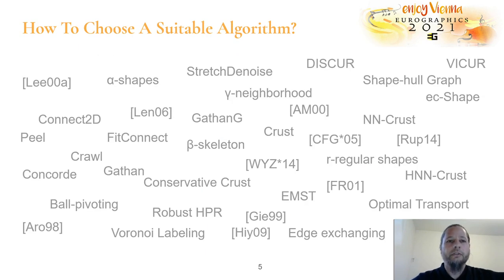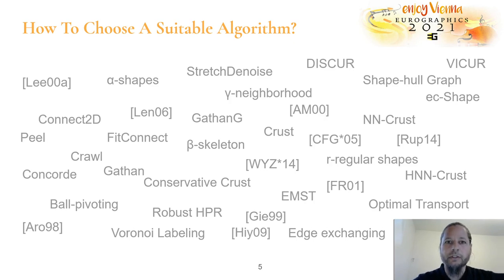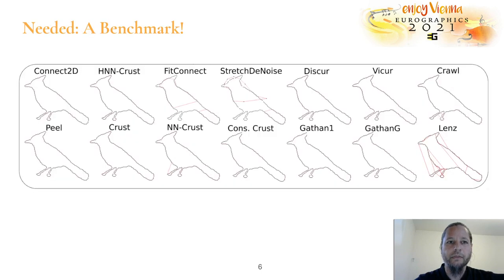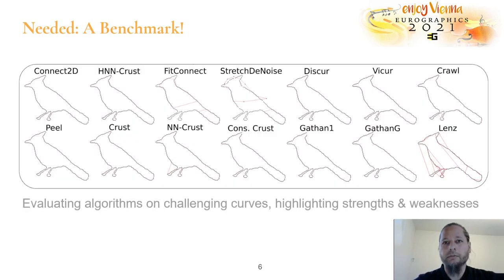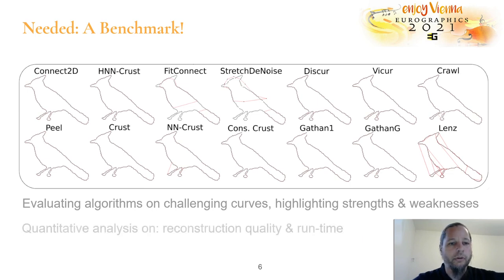There are a lot of different algorithms for 2D curve reconstruction. How can we make sure that we choose the proper algorithm which suits our needs? What we need is a benchmark that evaluates all algorithms on different challenging curves and highlights the strengths and weaknesses of each of them, but also gives quantitative analysis on reconstruction quality and the runtime, so we know what to expect.